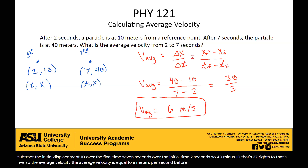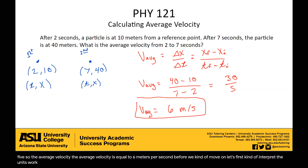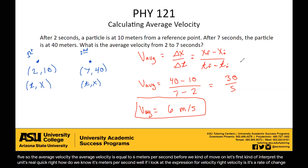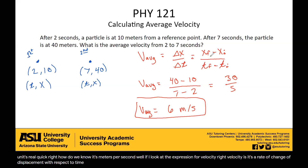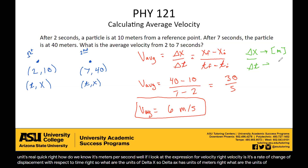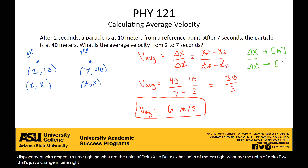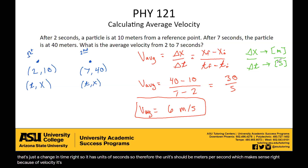Before we move on, let's interpret the units. How do we know it's meters per second? If I look at the expression for velocity — velocity is a rate of change of displacement with respect to time — the units of delta x are meters, and the units of delta t are seconds. Therefore, the units should be meters per second, which makes sense because velocity is a rate of change of distance with respect to time. So those units make sense.